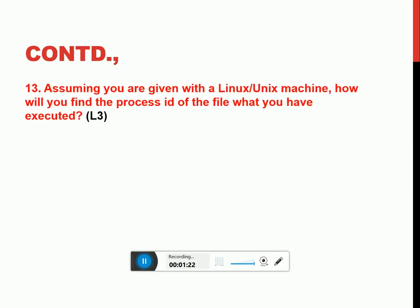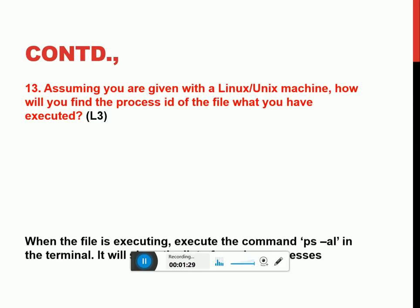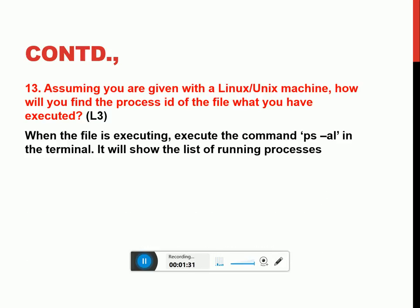Assuming you are given a Linux/Unix machine, how will you find the process ID of the file you have executed? Simple — we need to use 'ps -al', which will show the names of the processes running live on the machine. Or, while running the process itself, if you use the ampersand symbol (which is just above 7 on your keyboard), you will get the process ID instantly displayed on your machine.